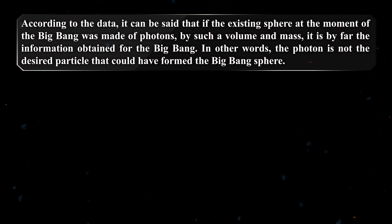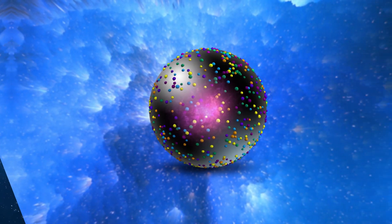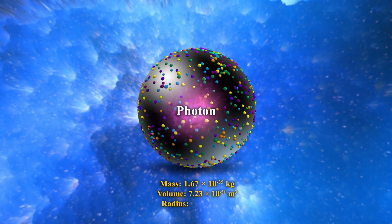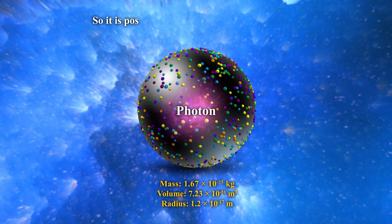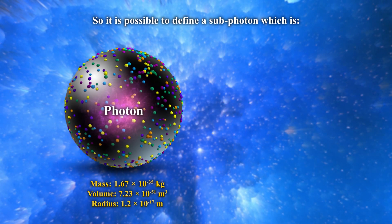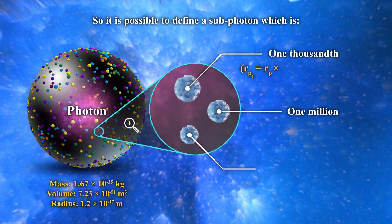It is possible to define a sub-photon which is one-thousandth, one-millionth, or one-billionth of a photon in terms of radius.